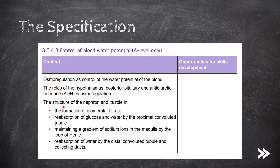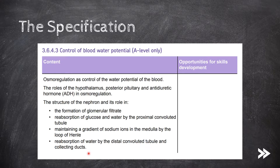Finally, we need to know the structure of the nephron and its role in the following events: the formation of glomerular filtrate, the reabsorption of glucose and water by the proximal convoluted tubule, the maintaining of a gradient of sodium ions in the medulla by the loop of Henle, and the reabsorption of water by the distal convoluted tubule and collecting ducts.